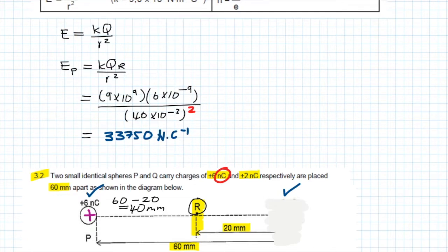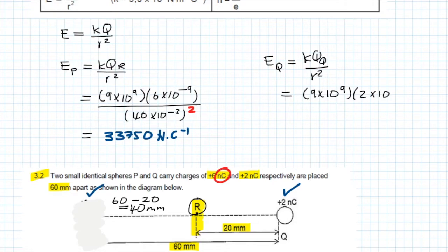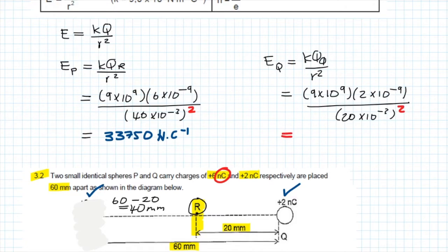Now that we're done with sphere P, we can take a look at sphere Q. It is 20 millimetres away from R. So the electric field as a result of Q equals K times the charge of Q, divided by the distance between Q and R squared. That is 9 times 10 to the power of 9, multiplied by 2 times 10 to the negative 9, all divided by 20 times 10 to the negative 3, squared. Don't forget the square. The answer is going to be equal to 45,000 newtons per coulomb.